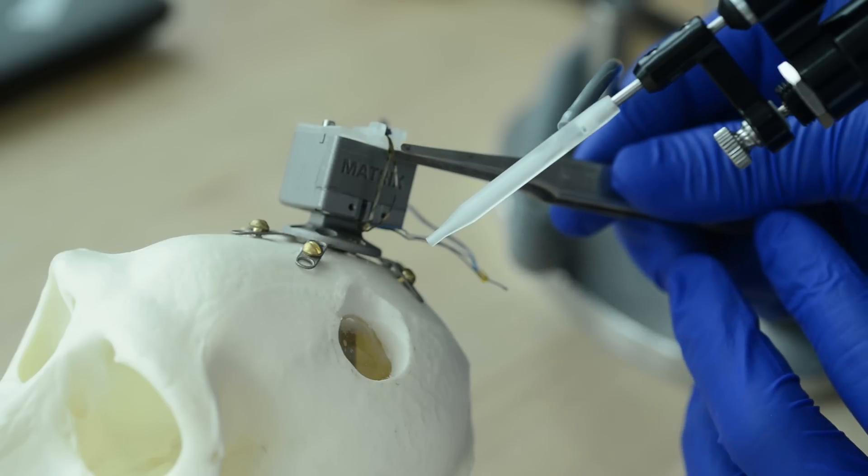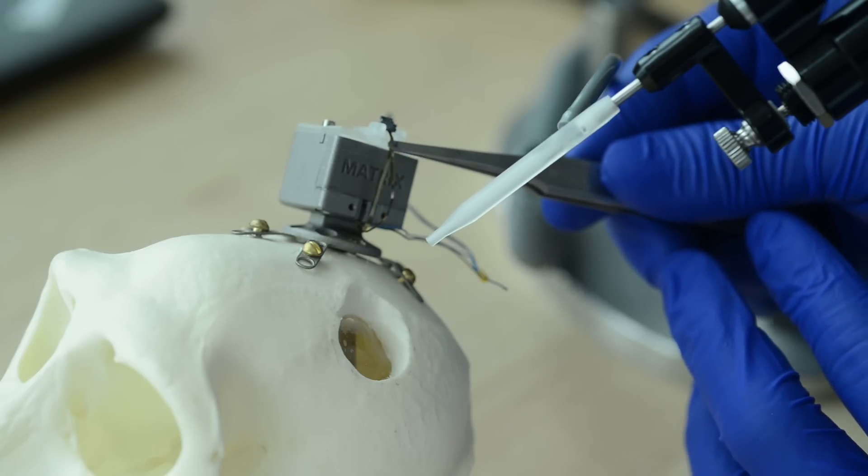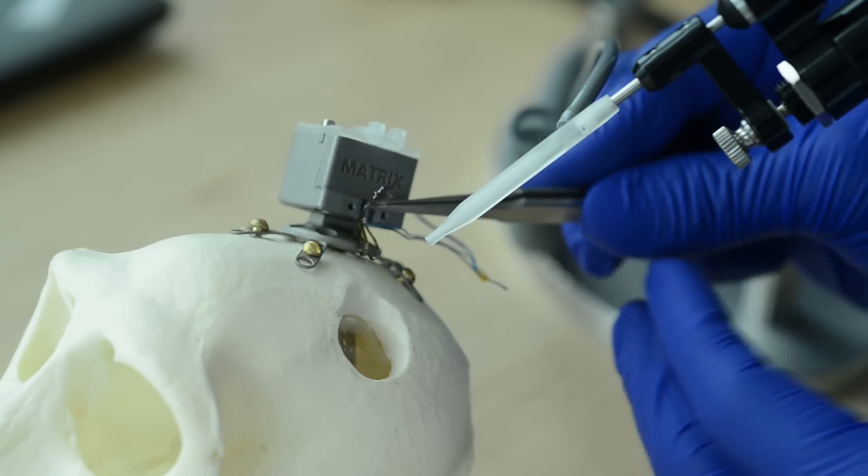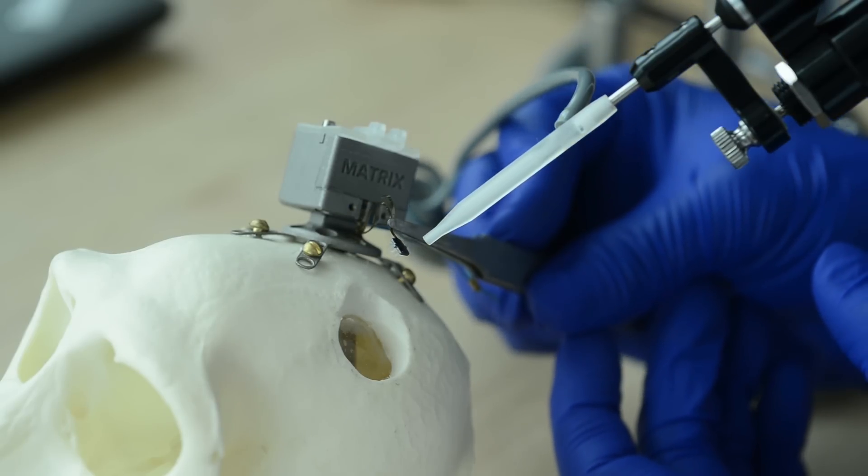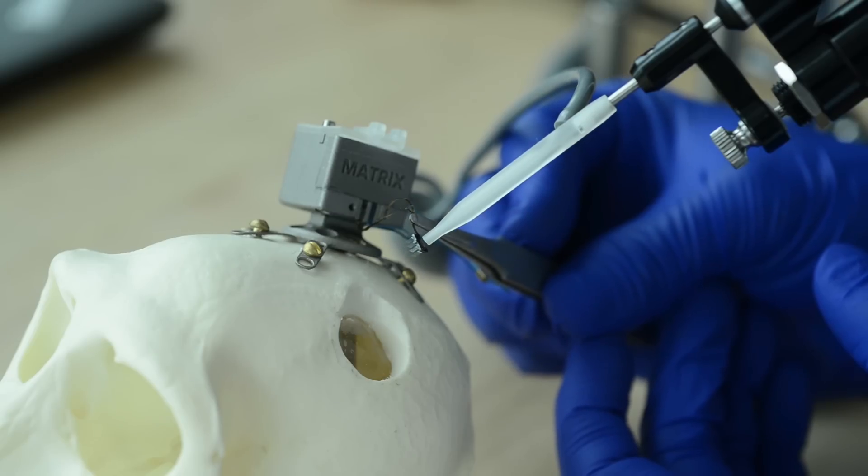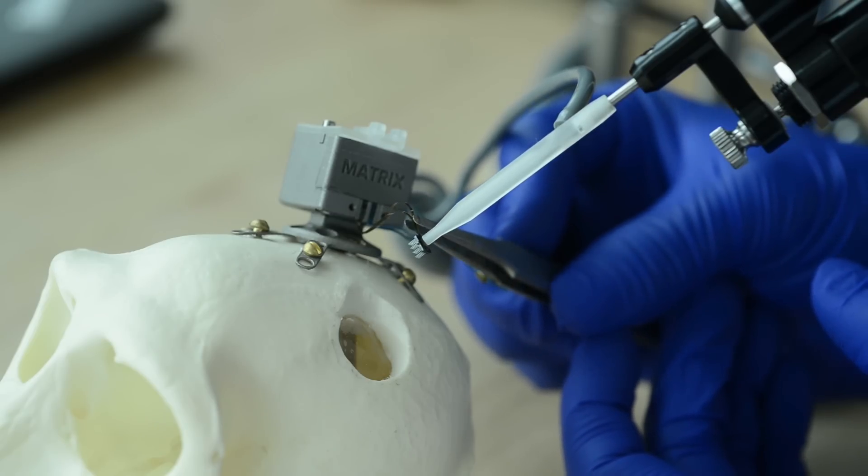Once the insertion tool has been set up and positioned, the Matrix Array can be disengaged from its protective cover and attached to the vacuum tip on the IST motor. This completes the setup process for the Matrix Array and is the only time the Matrix Array itself is handled before insertion.